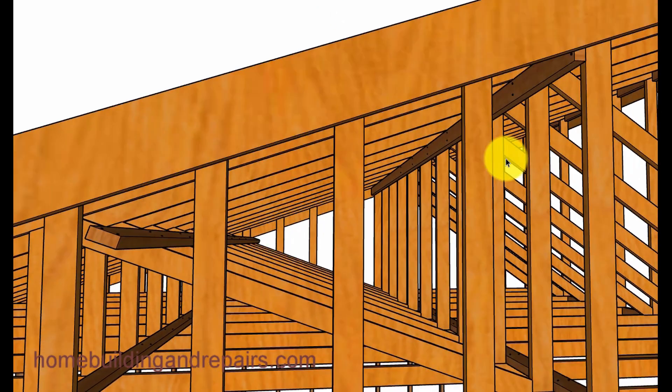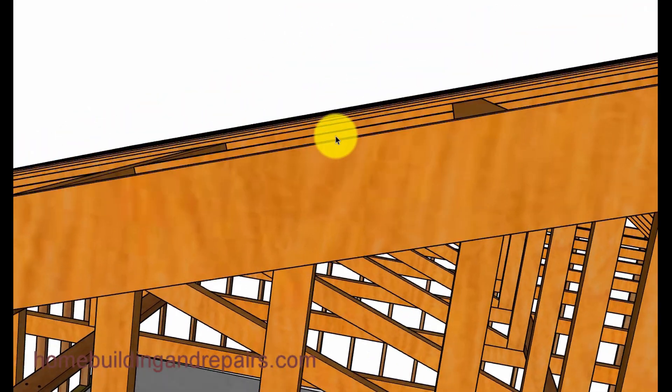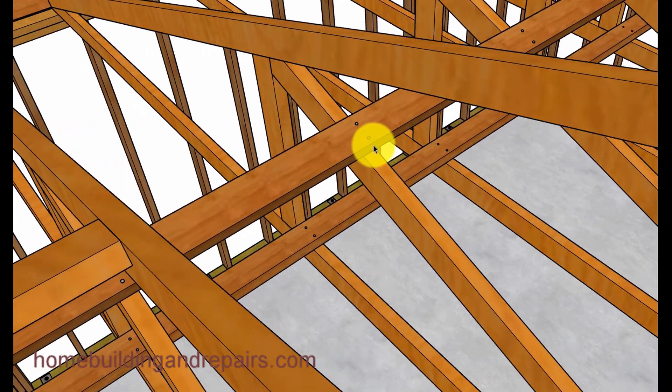The braces here help keep the trusses equally spaced and lined up. Use some 2x4s with 16D nailing. This one actually put two nails in each one. Sometimes only one nail is going to be required.